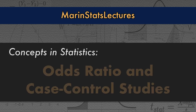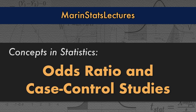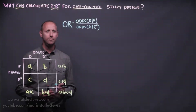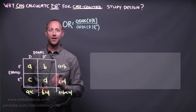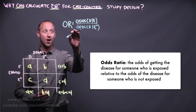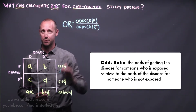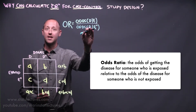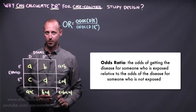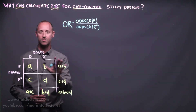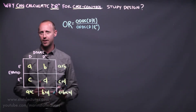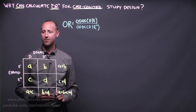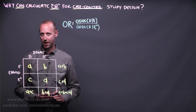We're going to talk about why it is okay to calculate an odds ratio for a case-control study design. The odds ratio is the odds of getting the disease given someone's exposed relative to the odds of the disease given they're not exposed. We're going to work this out using the following two-by-two table set up in the conventional ABCD format.